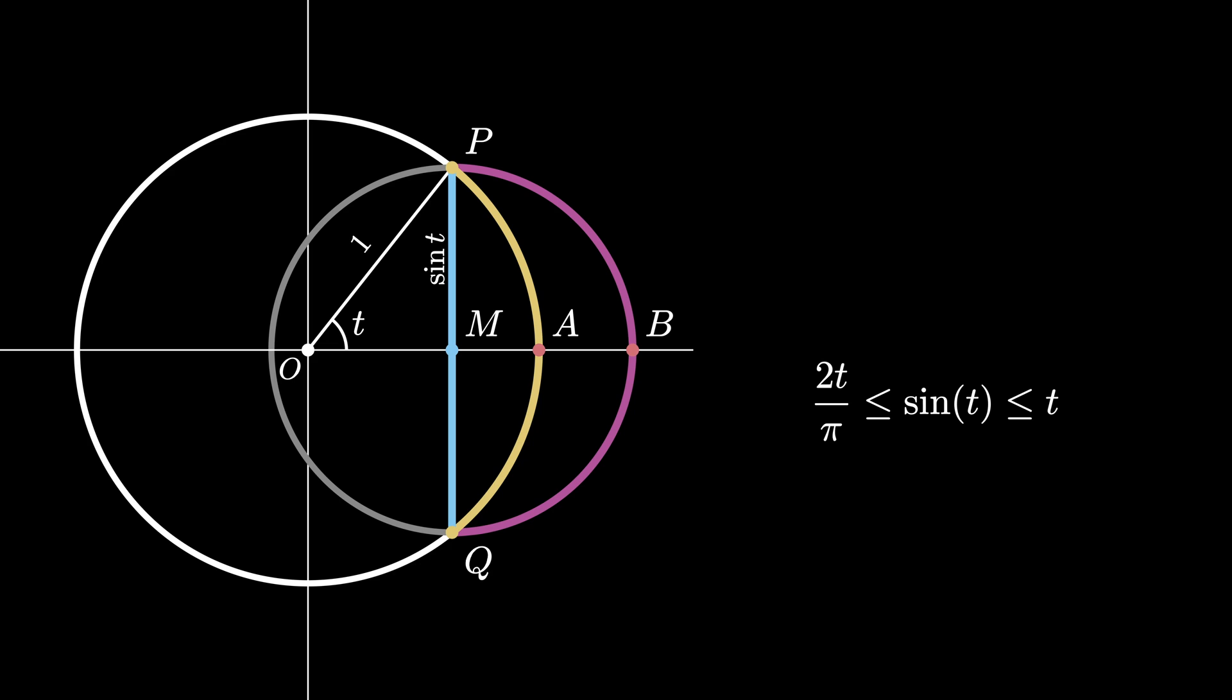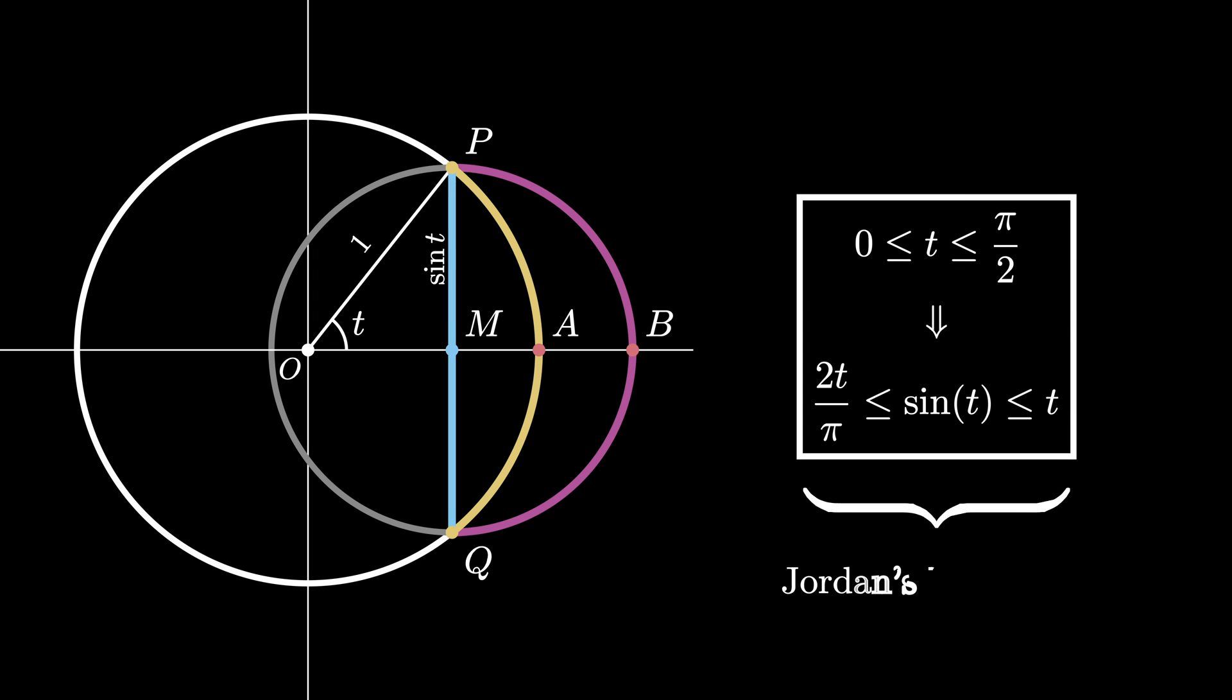Notice this is only true if the angle T is in the first quadrant, so T lies between 0 and pi over 2. This inequality is known as Jordan's inequality.